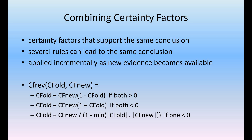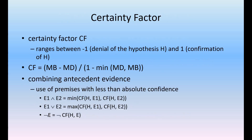Combining certainty factors that support the same conclusion: several rules can lead to the same conclusion, applied incrementally as new evidence becomes available. If CF_new_combined equals CF(CF_old, CF_new): when both are greater than 0, it equals CF_old plus CF_new times (1 minus CF_old). If both are less than 0, it equals CF_old plus CF_new divided by (1 minus minimum of |CF_old|, |CF_new|). If one is less than 0, the formula differs accordingly.